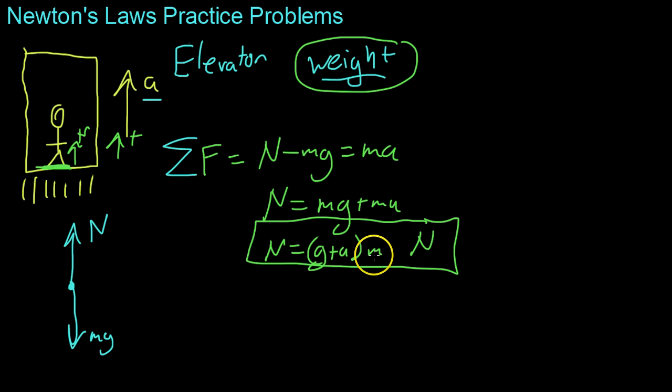This leads us to some interesting conclusions. For example, what if a is negative g? In other words, this elevator is falling downwards with this acceleration of negative g. Well, then this term right here becomes zero, and you become weightless. And this is sort of how astronauts on the International Space Station and other spacefaring craft experience this weightlessness. It's not that they're not experiencing gravity. It's rather that everything around them is experiencing the same g value. So, relative to this elevator, you can sort of float around, because there's no normal force acting on you.